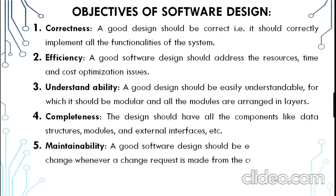Let us understand some of the objectives of the software design. The first objective is correctness. A good design should be correct — it should correctly implement all the functionalities of the system. Based on the requirements, we should implement all the functionalities in the system. That is correctness, the first objective.